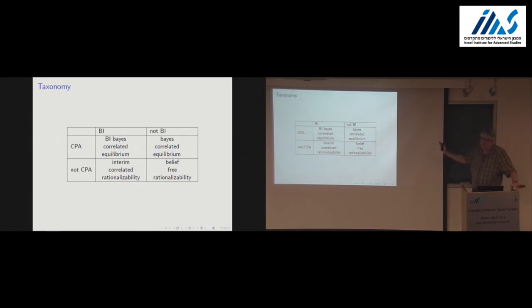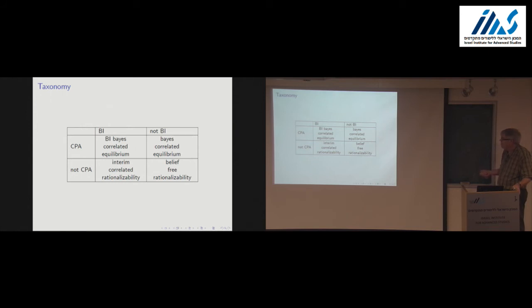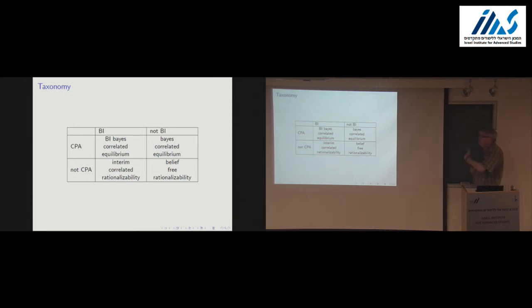Taxonomy. We can do a taxonomy. We've said I can impose the common prior assumption or not. I can restrict your expansion to be belief-invariant — capturing correlation but not payoff-relevant information — or not. We started out with belief-free rationalizability: if you impose the common prior, you get Bayes correlated equilibrium; if you impose belief invariance, you get interim correlated rationalizability. There's another box combining both restrictions.